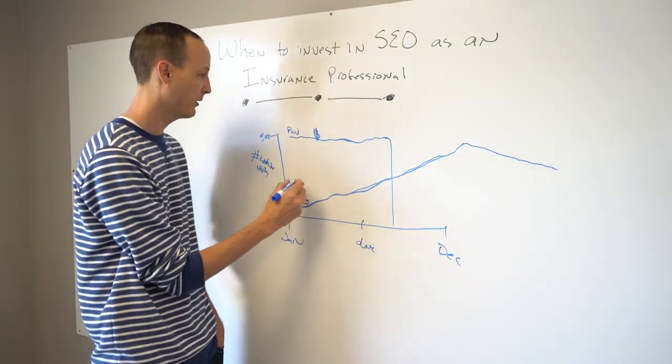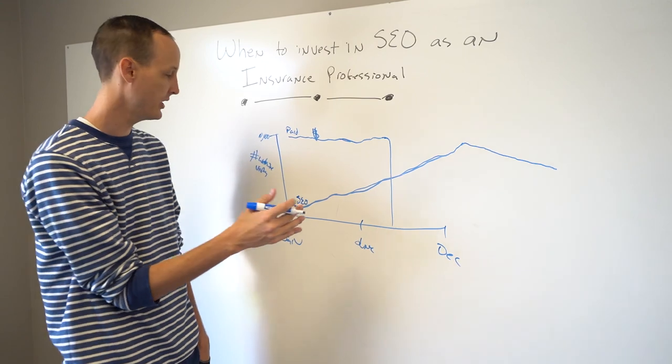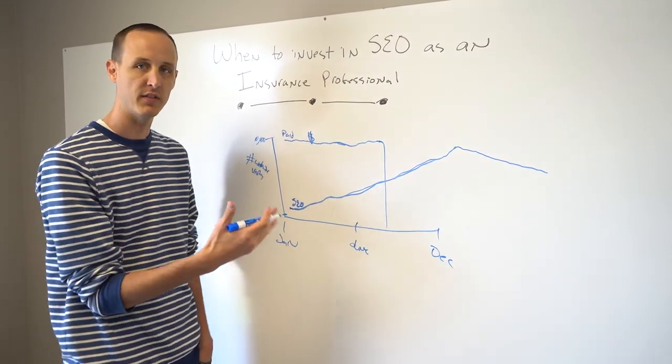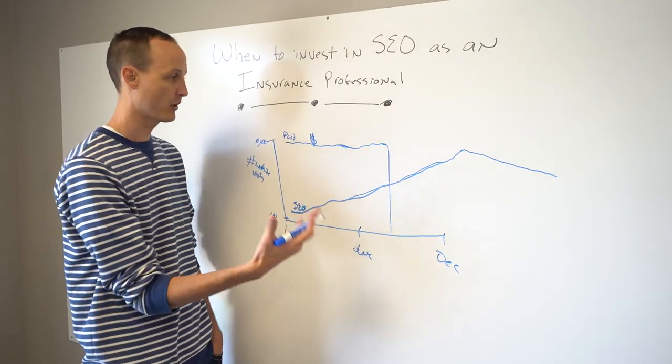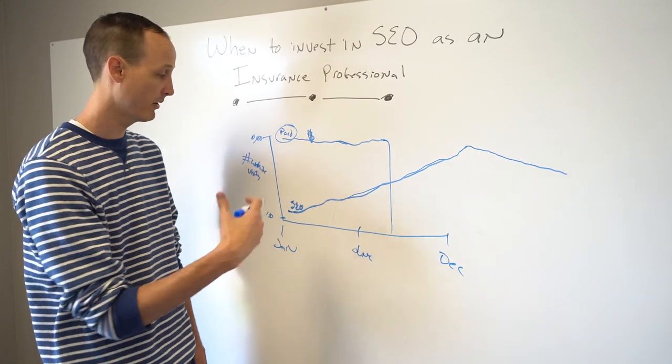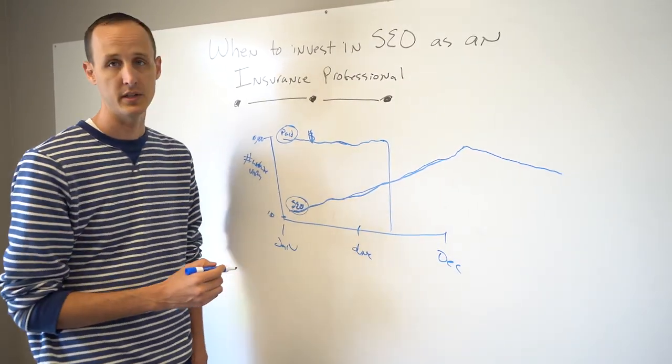So what I always try and tell people if they have a healthy digital marketing budget, is you want to invest in SEO, and paid traffic if you can, if you have a healthy enough budget. But if you're looking at short-term goals, just do paid. If you're looking at long-term goals, and building your brand, and building overall traffic to your site, then you look at search engine optimization.